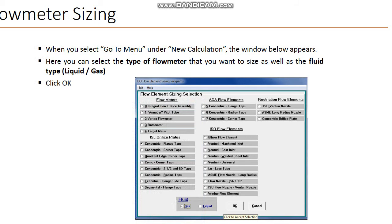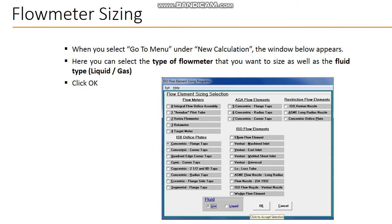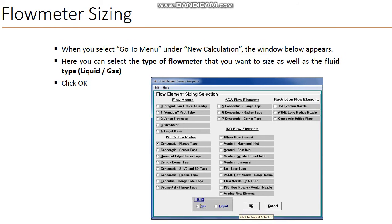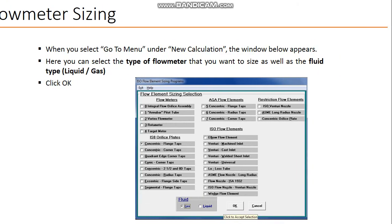Here you can choose what type of flow meter you are sizing. In this snapshot you can see concentric flange taps. For example, ISO orifice under that you can see concentric flange taps, concentric corner taps, quadrant edge corner taps. You can choose one and fluid as gas. We have already chosen. Then you press okay.